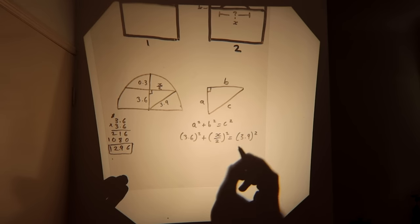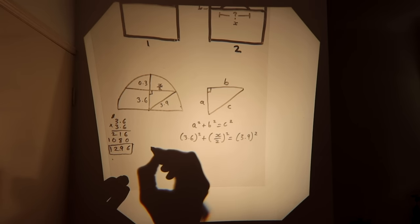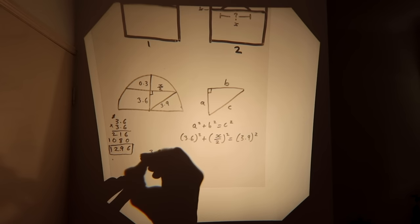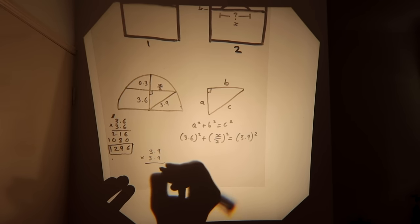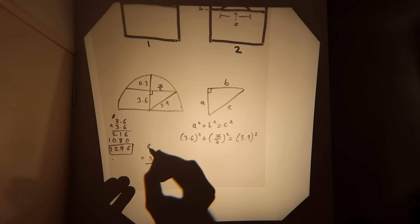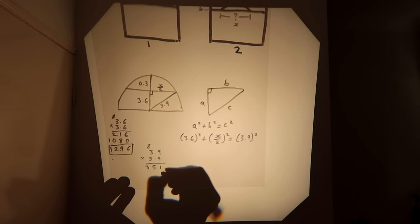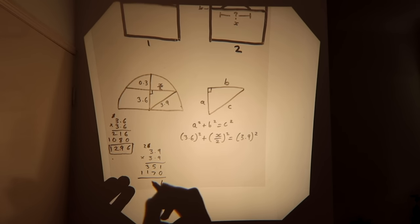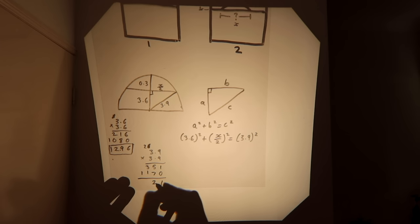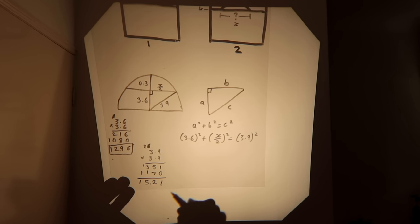Again in our little margin, we could do the same, find 3.9 squared. We'd go 3.9 times 3.9. 9 times 9 is 81. 3 times 9 is 27 plus 8 will give us 35. Do our next line, 3 times 9 is 27. 3 times 3 is 9, 10, 11. This one will add to give us 15.21.